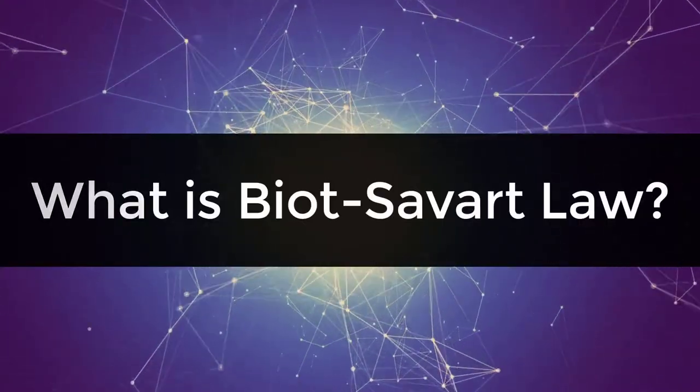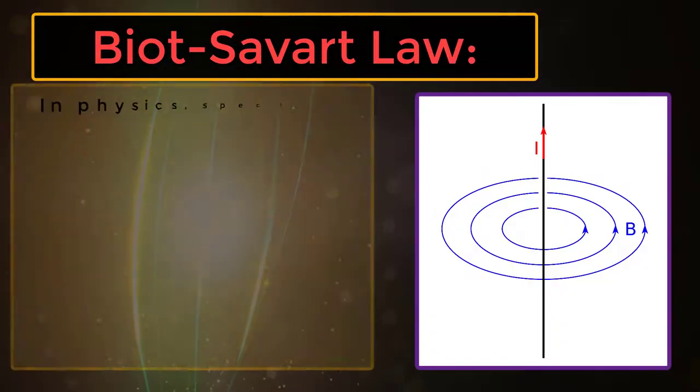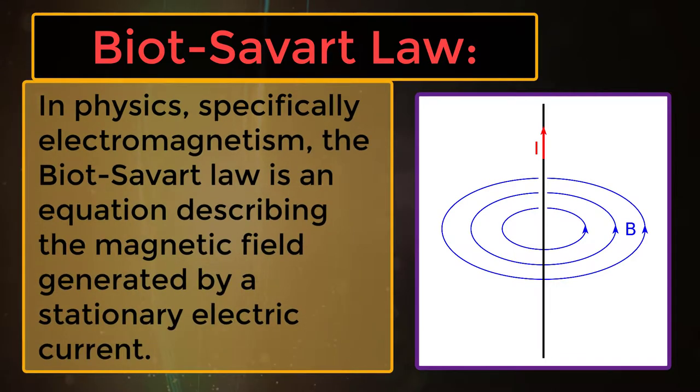What is Biot-Savart law? Biot-Savart law, in physics, specifically electromagnetism, the Biot-Savart law is an equation describing the magnetic field generated by a stationary electric current.